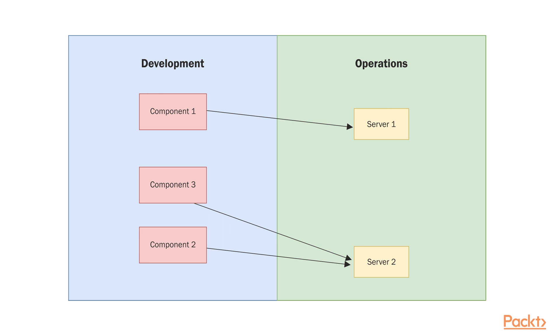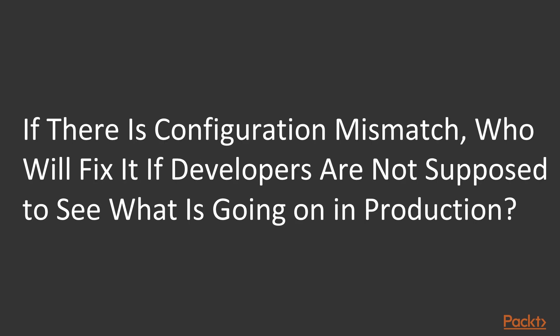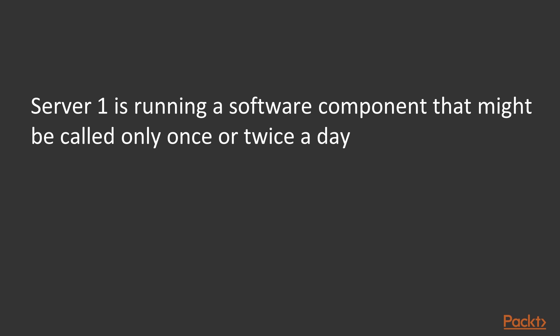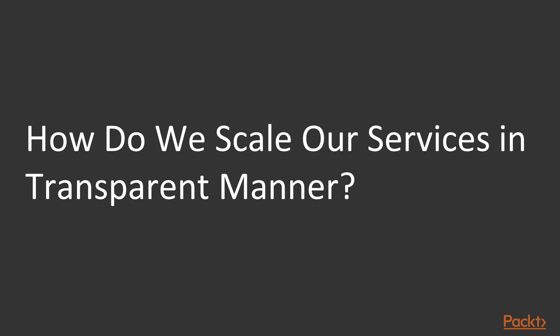Here are a few considerations. There is a clear separation between development and operations, which may vary depending on the size of your company. Software components are owned by development and deployments, and configuration is owned by operations. Some servers might be relatively underutilized and on a very low load. This has been the picture for 40-odd years of software development, and it is still the picture if we are running Docker containers. But there are a few problems. If a problem arises in Component 3 in production, who is responsible for it? If there is a configuration mismatch, who will fix it if developers are not supposed to see what is going on in production? And if Server 1 is running a software component that might be called only once or twice a day, do we need a full VM just for it? How do we scale our services in a transparent manner?